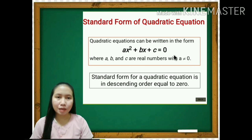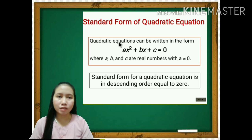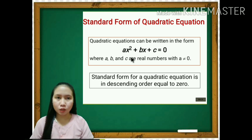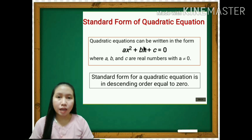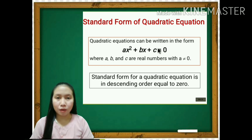Take note that the standard form for a quadratic equation is in descending order, equal to 0. When we say descending order, as you can see here, the exponent of our quadratic equation: in ax squared, which is the quadratic term, the exponent is 2; in bx, the exponent of x is 1; and c has no exponent.